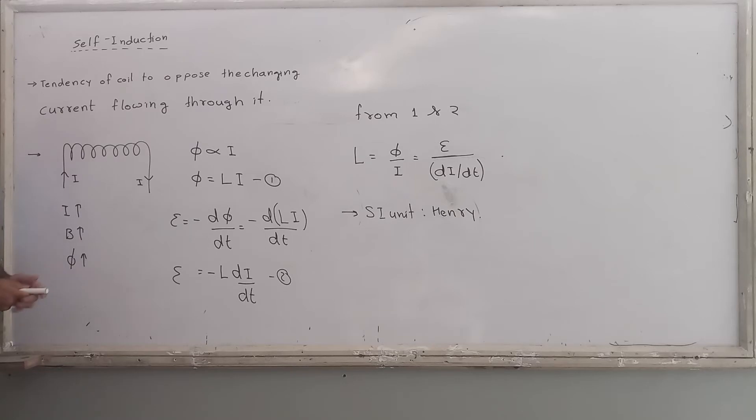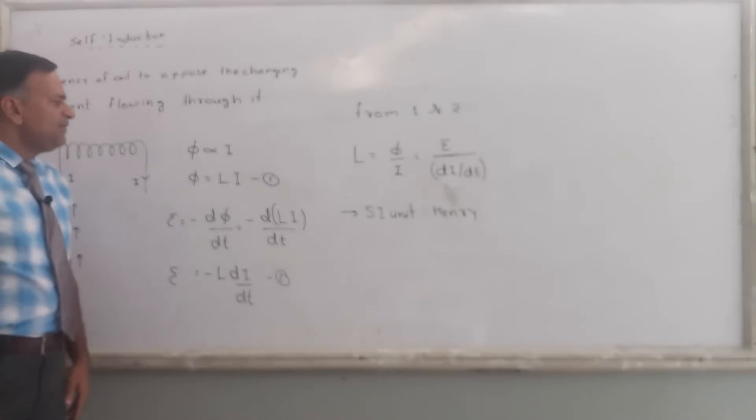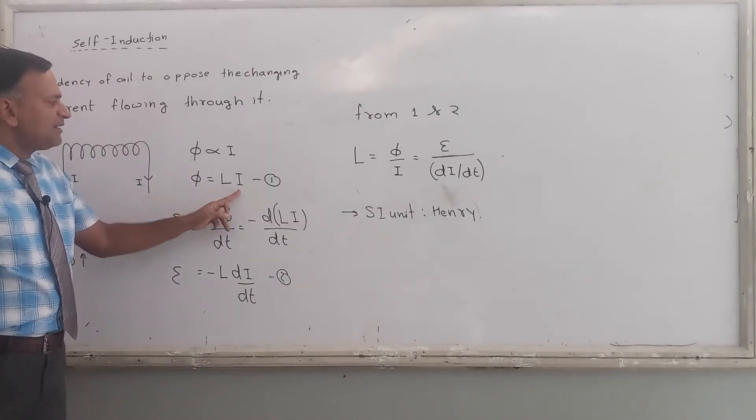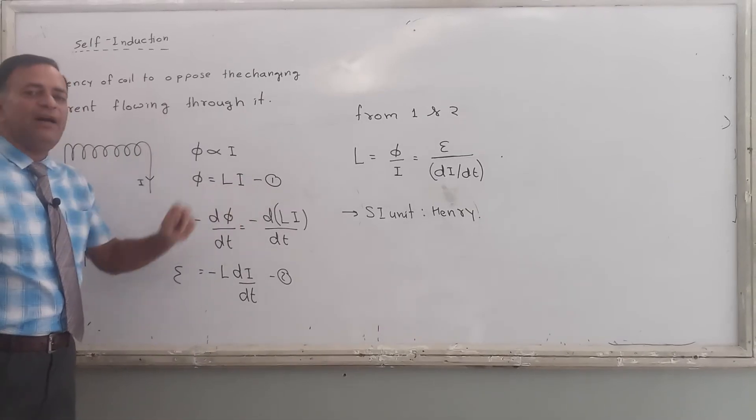This phenomenon has some equations. Flux is directly proportional to current. Current increases, magnetic field increases, flux also increases. So flux is directly proportional to current. And the constant which relates magnetic flux and electric current is L. Proportional constant, so phi is equals to L into I.